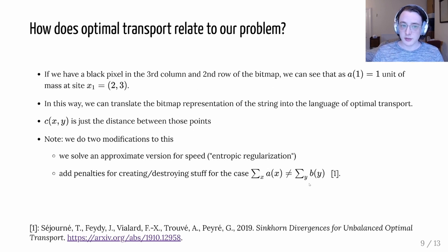Okay so how does this relate to our problem? Well if we have a black pixel in the third column and second row of our bitmap then we could interpret that as one unit of mass at the site x1 which is just 2 comma 3. And so in this way we can translate our bitmaps into this language used by optimal transport. And our distance c of xy will just be the Euclidean distance between these points.